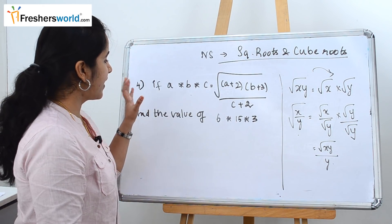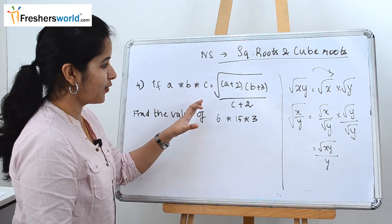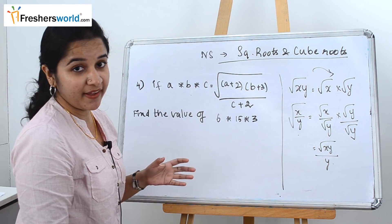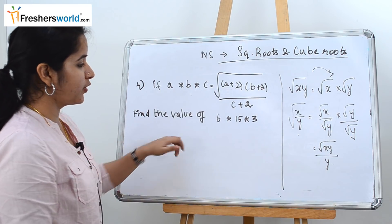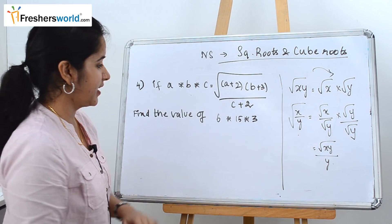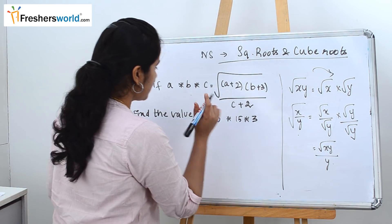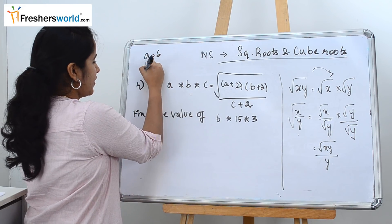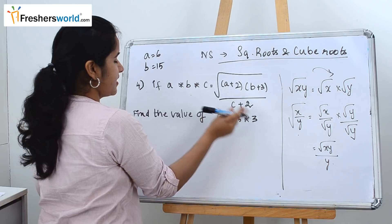So the next sum is they have given if value of a into b into c is equal to square root of a plus 2 into b plus 3 whole divided by c plus 2, then find the value of 6 into 15 into 3. So what we have to first do? Equate the values. So a is equal to 6, b is equal to 15, and c is equal to 3.